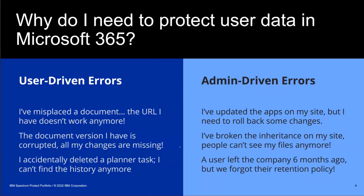There could also be admin-driven errors. For example, an admin has updated apps on a site but needs to roll back some of the changes, and this rollback may affect other data that is still good and should not be rolled back — but the granularity of the rollback does not allow rolling back just a single app on the site. Or there could be a permission inheritance issue on the site and users can't see the files anymore. Another example: one of your employees left the company six months ago and you want to recover the mailbox that was soft deleted at the time the employee left, but you forgot to set the right retention policies and that soft-deleted mailbox is already removed from the Microsoft service.